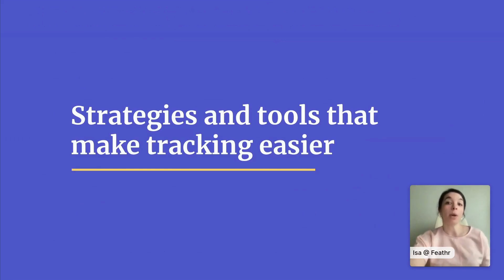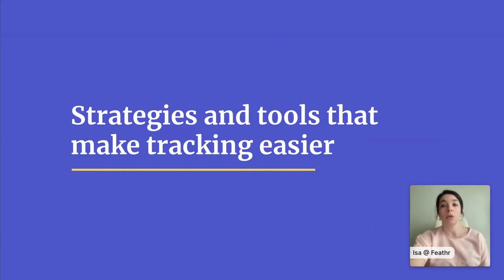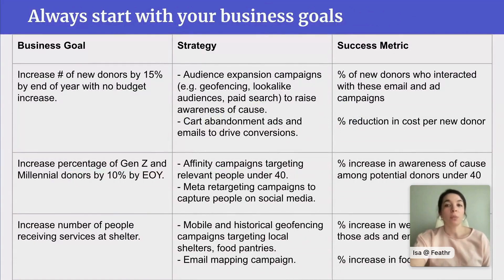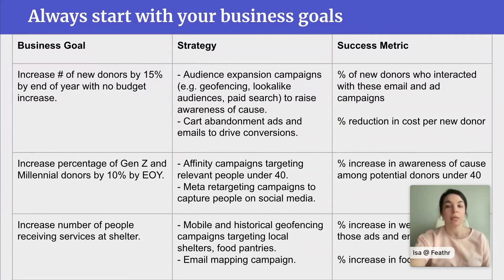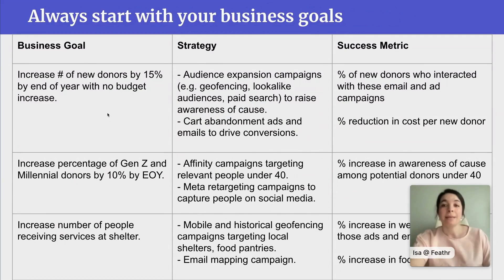Now that you have some ideas about what marketing metrics to focus on, let's talk about strategies for actually putting these metrics into place. This is where appropriate goal setting comes in. A marketing or fundraising campaign should never be created in a metrics-first way — you always want to start with your business objective. Yes, it should be measurable and that's where the metrics come in, but focusing on the goal first helps you stay aligned with your organization's goals and come up with a communications plan that actually makes sense. For example, let's say your business goal is to increase your number of new donors by 15% by the end of the year with no additional budget.